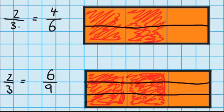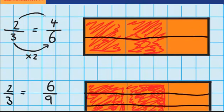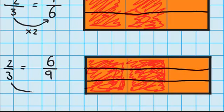Now let's look at both of these that we've done — where we changed two thirds into four sixths and two thirds into six ninths — and see if we can spot any pattern. You might have noticed that I can change a three into a six by multiplying it by two, and I can change the two into a four by multiplying it by two. Going down to the one we changed into ninths: I can change the three into a nine by multiplying it by three, and I can change the two into a six by multiplying it by three.